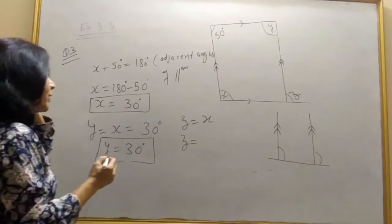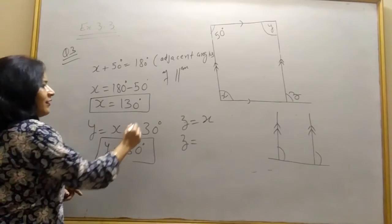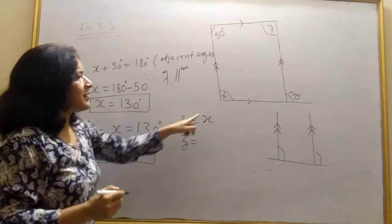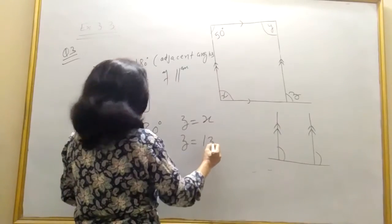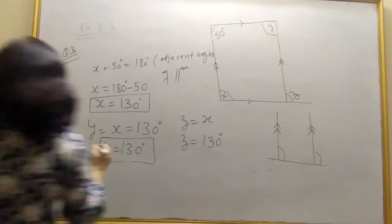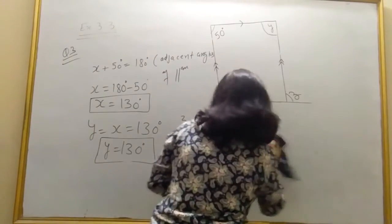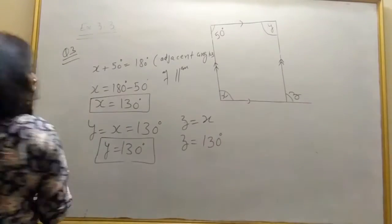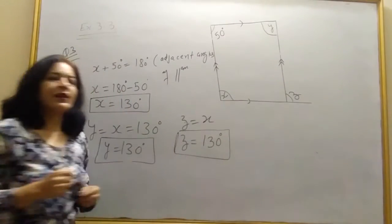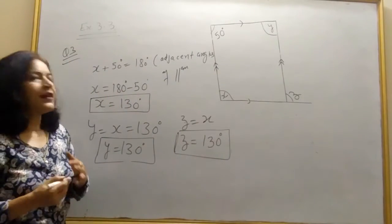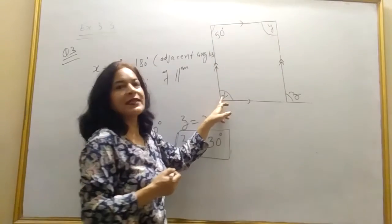So z will be equal to x. Here I am sorry, 180 minus 50 is 130. So z is equal to x, so it is 130 degrees. So angle x is equal to angle y is equal to angle z, all are equal to 130 degrees.